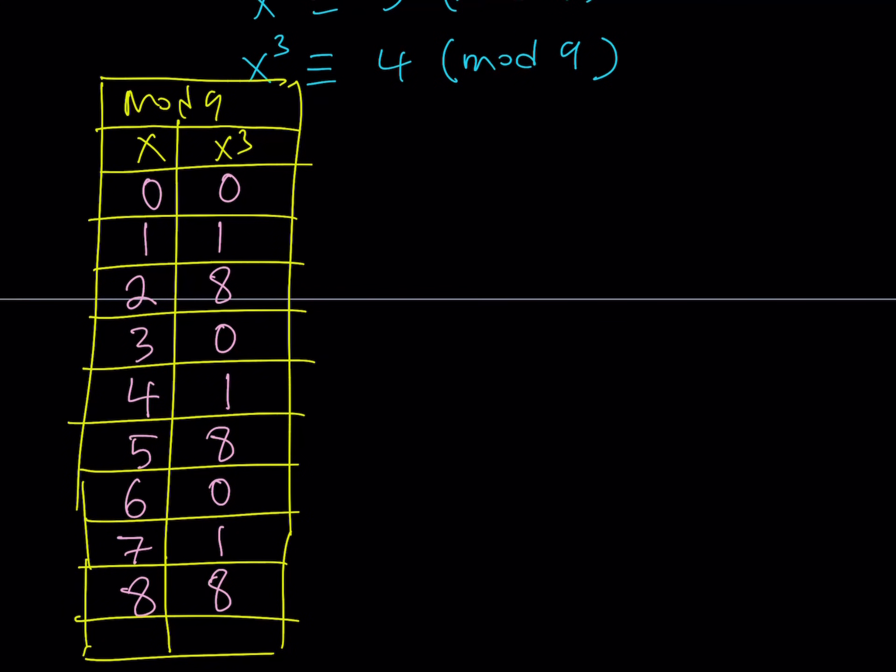Now, what does this table tell you? This table tells you that, when you cube a number in mod 9, it can only be 0, 1 or 8 mod 9. It can't be anything else.